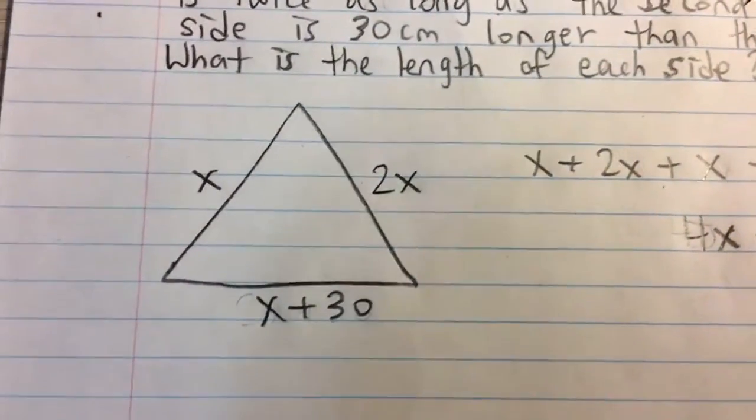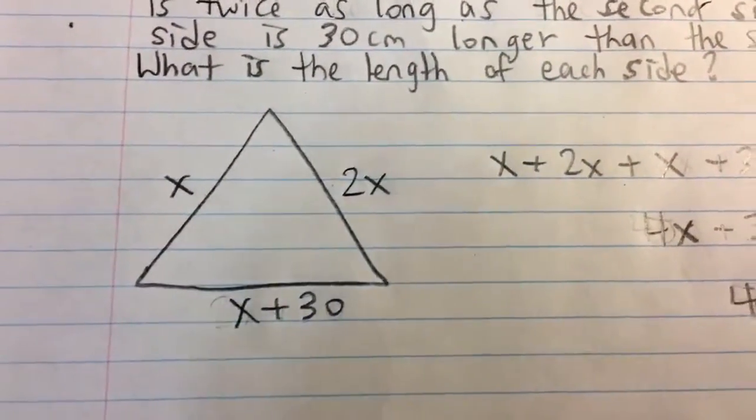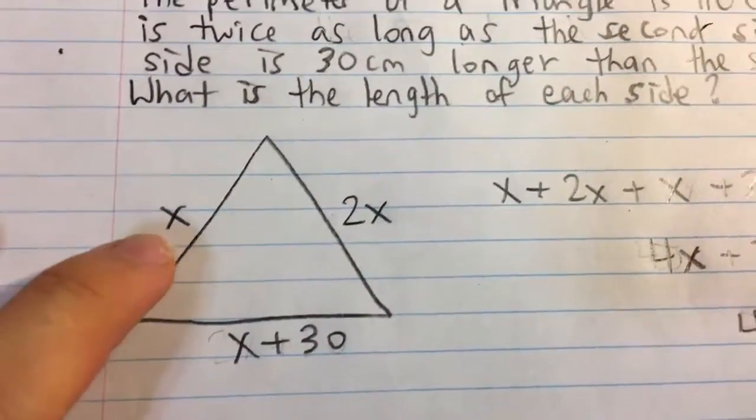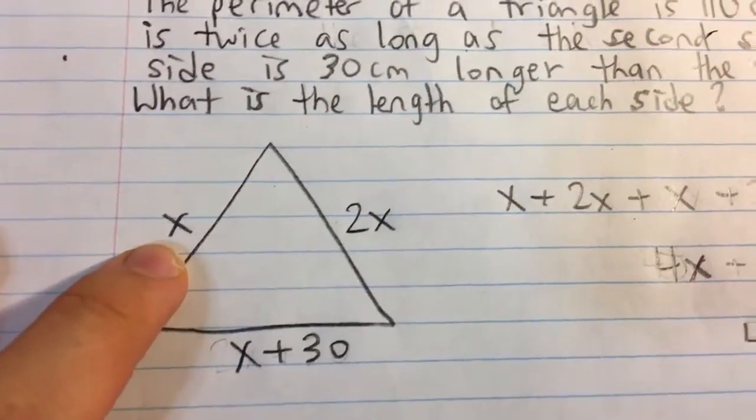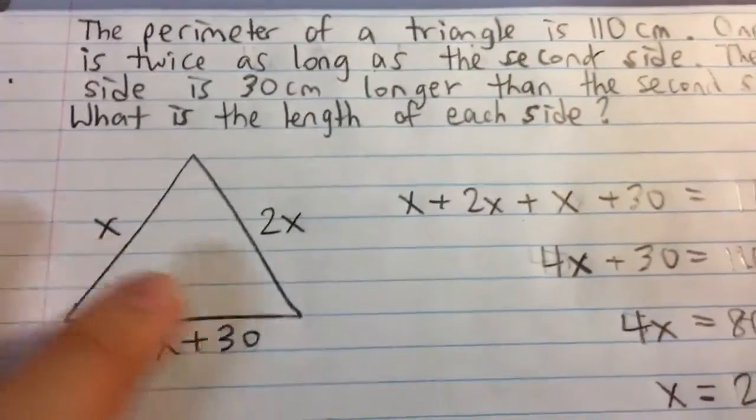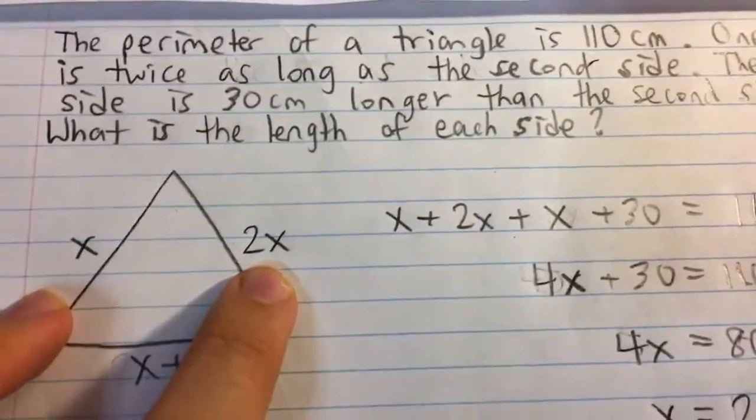So here, if we draw our triangle, it says that one side is twice as long as the second side. So if we label the second side to be x centimeters long, then one side will be two times x, twice as long.